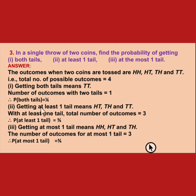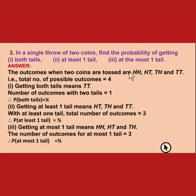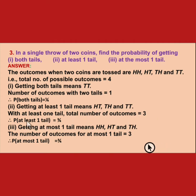Next, getting at least 1 tail means 1 or more than 1 tail. In the outcomes, head-head has no tail, head-tail has 1 tail, tail-head has 1 tail, and tail-tail has 2 tails. So head-tail, tail-head, and tail-tail are the favorable outcomes — total 3. Probability of at least 1 tail is 3 upon 4.